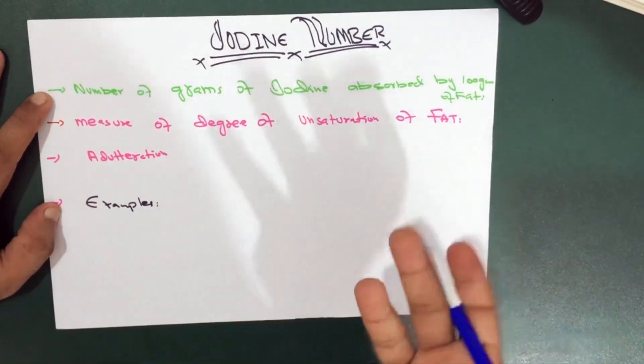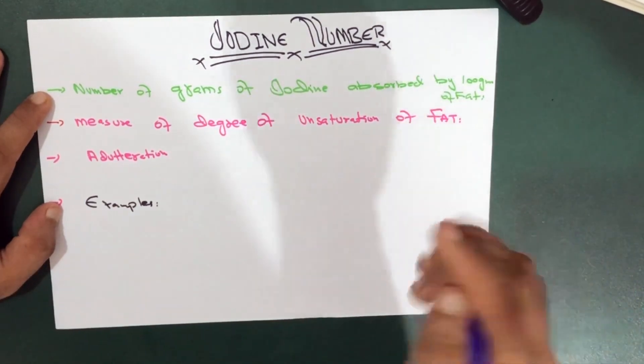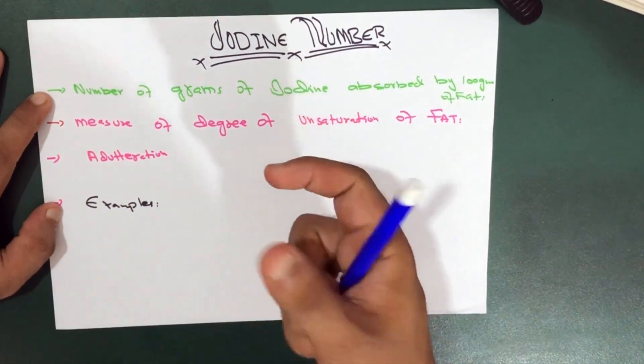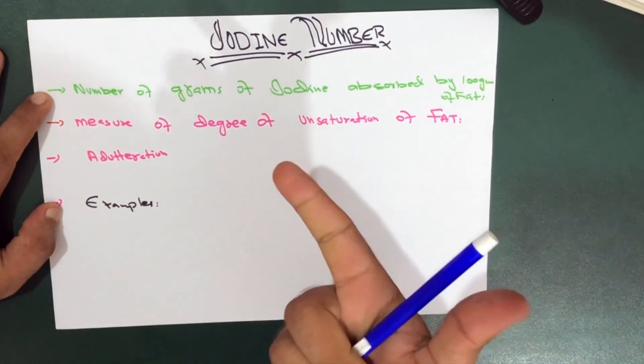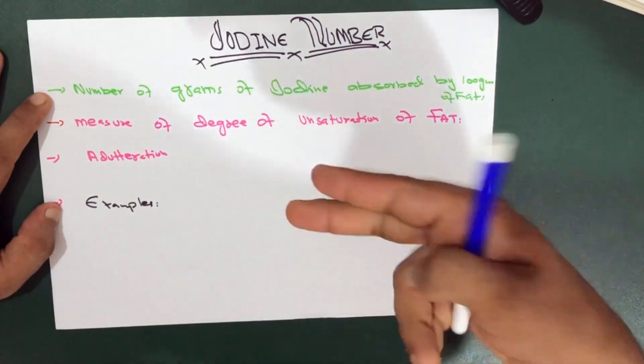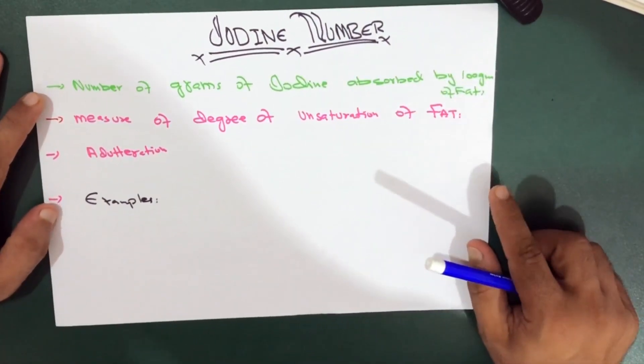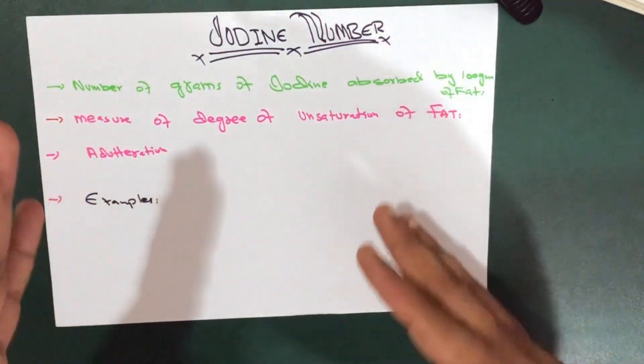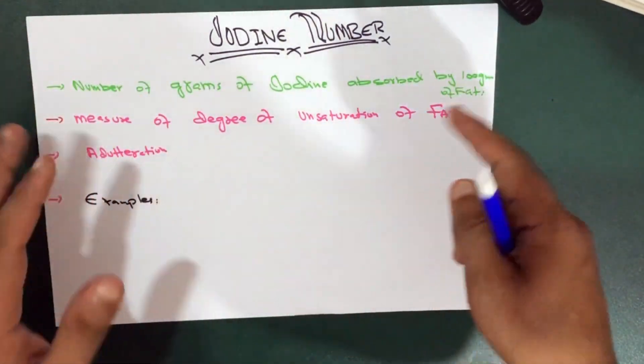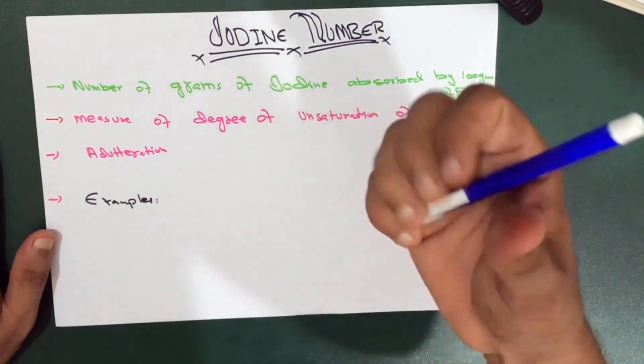Why is this necessary? Remember that iodine is absorbed at the double bonds in fatty acids. Whenever there are double bonds in the fat, the iodine is absorbed.